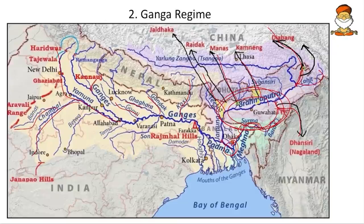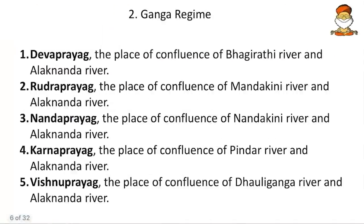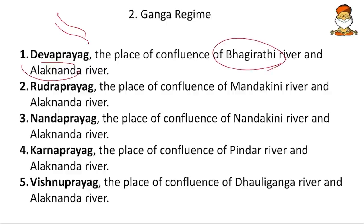Coming to the central highland, we have the Chambal river, then Banas, Cane, and Betwa rivers, along with Tons and Sone rivers. Also remember Damodar and Ungli. Now for some facts: whenever Ganga and Yamuna arise, they form mergers and re-mergers. The place of confluence of two rivers is called a Prayag. Dev Prayag is the confluence of Bhagirathi and Alaknanda. Rudra Prayag is the confluence of Mandakini and Alaknanda — famous from Jim Corbett's 'The Man-Eaters of Rudraprayag.'